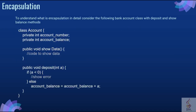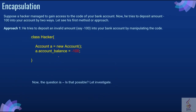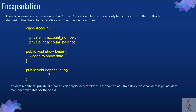For example, consider a bank account class with deposit and show balance methods. This is the bank class. These are the methods using this bank. Now suppose a hacker manages to gain access to the code of your bank account. He tries to deposit an amount of minus 100 into your bank account by manipulating the code. Now the question is, is this possible? Usually variables in a class are set as private. It can only be accessed with the methods defined in the class. No other class or object can access it.